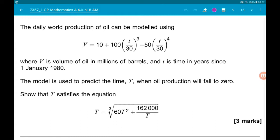Okay, question 11. So the daily world production of oil can be modeled using V equals 10 plus 100t over 30 cubed minus 50t over 30 to the power of 4, where V is the volume of oil in millions of barrels and T is the time in years since 1980.